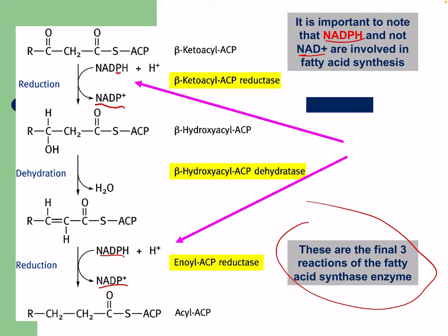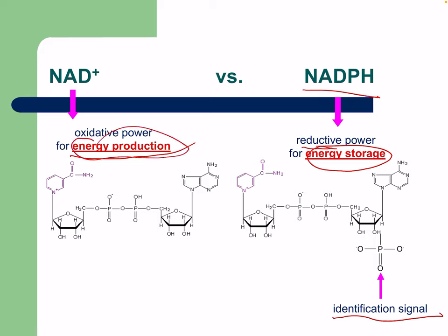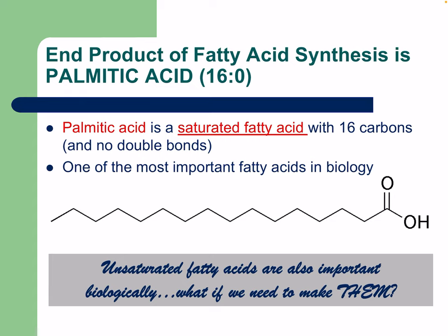NAD+ is used for energy production with oxidative power, while NADPH is used for energy storage with reductive power. The end product of fatty acid synthesis is palmitic acid, or palmitate, which is a 16-carbon saturated fatty acid with no double bonds — one of the most important fatty acids in biology. The second number in the fatty acid nomenclature indicates where double bonds are located along the carbon chain.